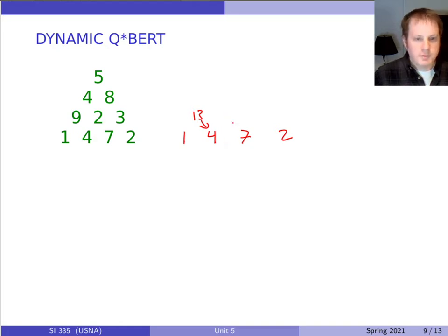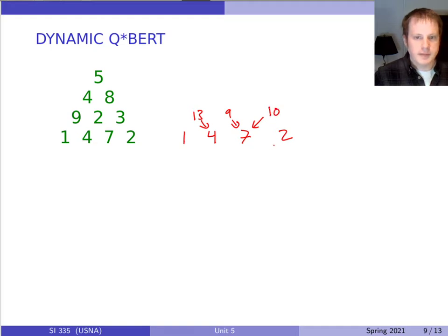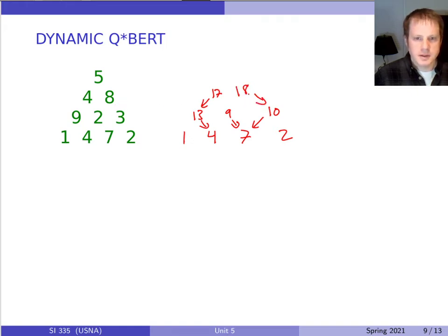At the bottom we have 1, 4, 7, and 2 — those are the best sums from there. Then we compute the best sum: between 1 and 4 adding 9, I'd rather add 9 to 4, so that's 13. Between 4 and 7, I'd rather go with 7, so 7 plus 2 is 9. For the 3 between 7 and 2, I'd rather go to 7, giving us 10. Moving up for the 4, between 13 and 9, 13 is bigger, giving me 17. And for 8, between 9 and 10, I'd rather go to 10, giving me 18. For 5 at the top, I'd rather go to 18, giving a total of 23.